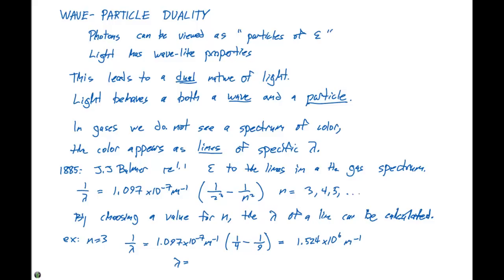If we calculate lambda, since 1 over lambda is 1.524 times 10 to the 6th, we get 6.563 times 10 to the minus 7 meters, which converts to 656.3 nanometers.